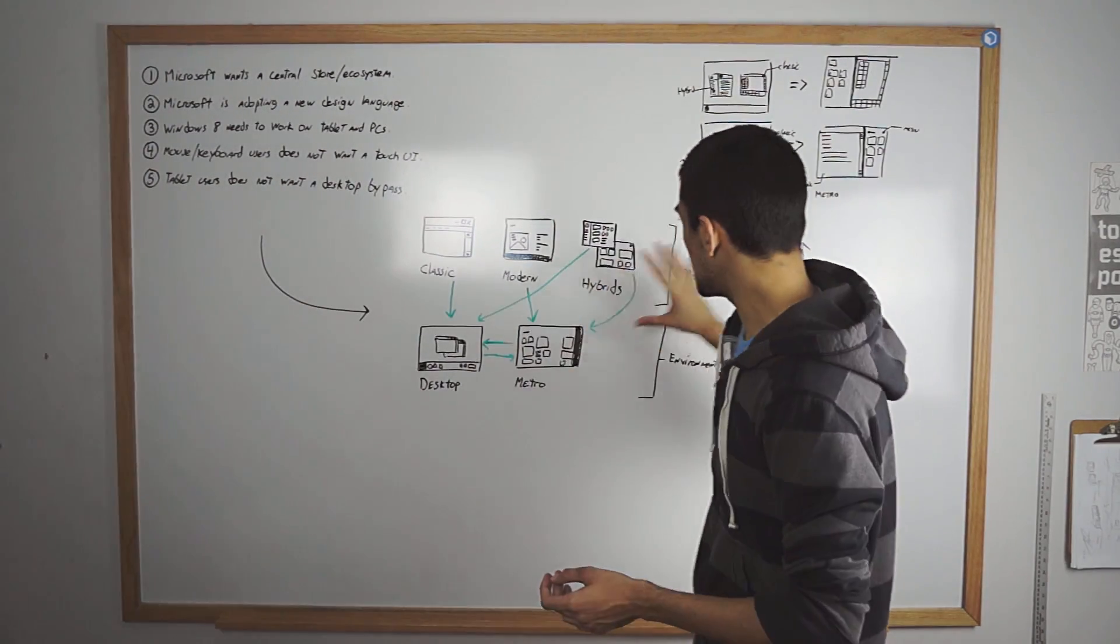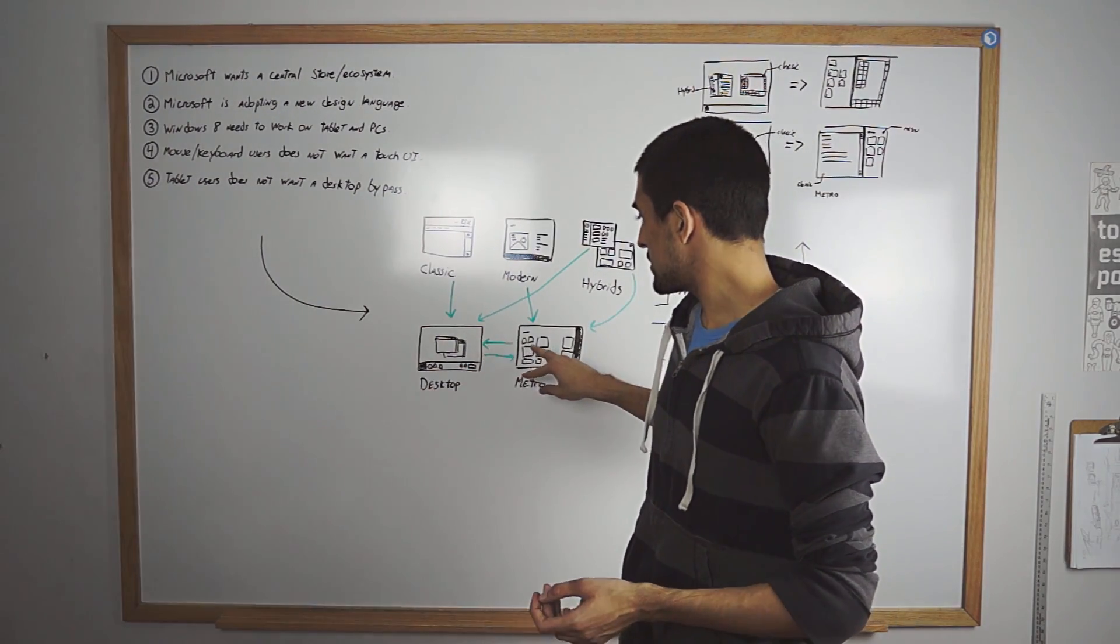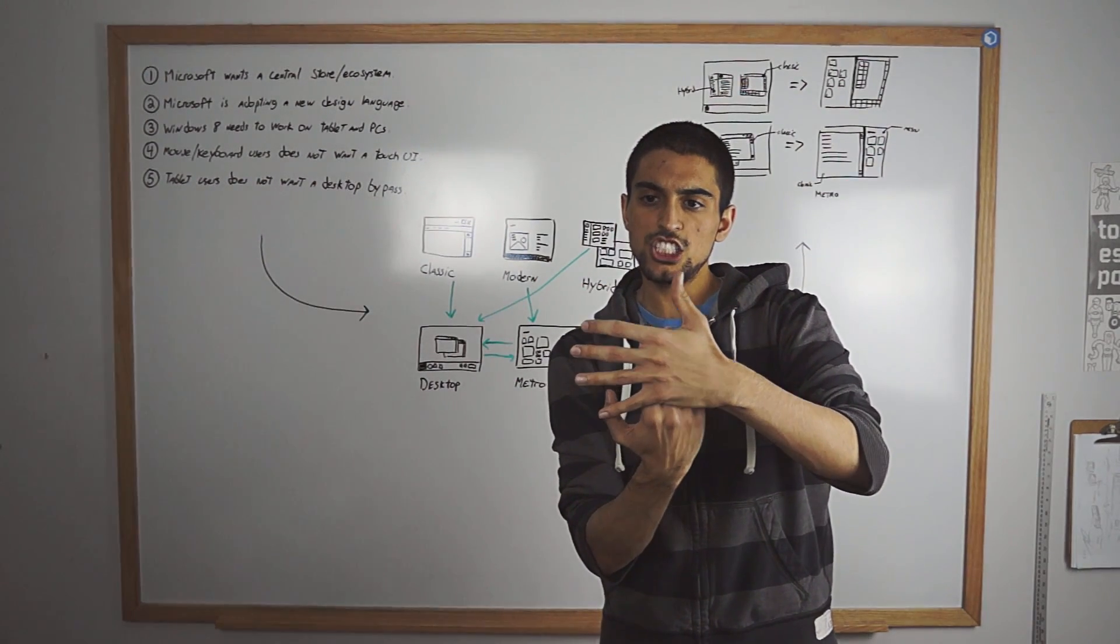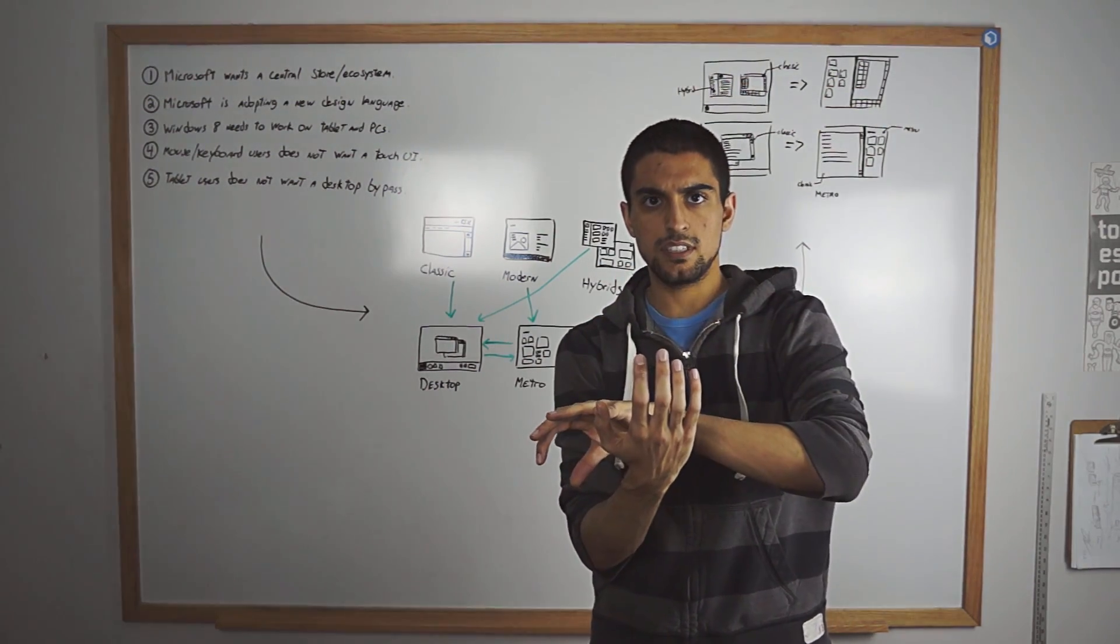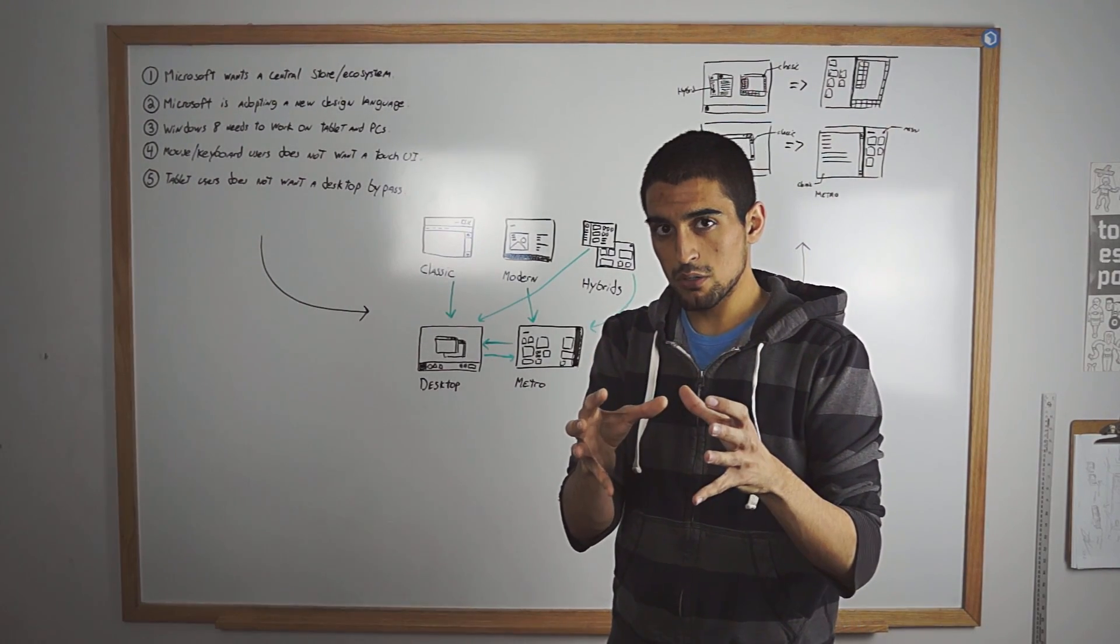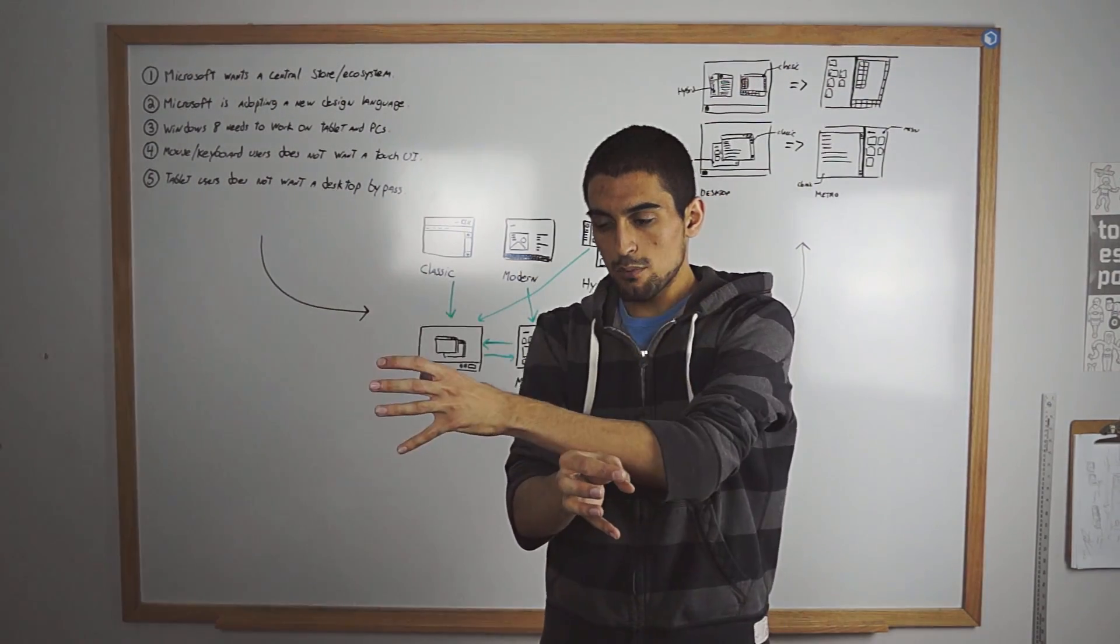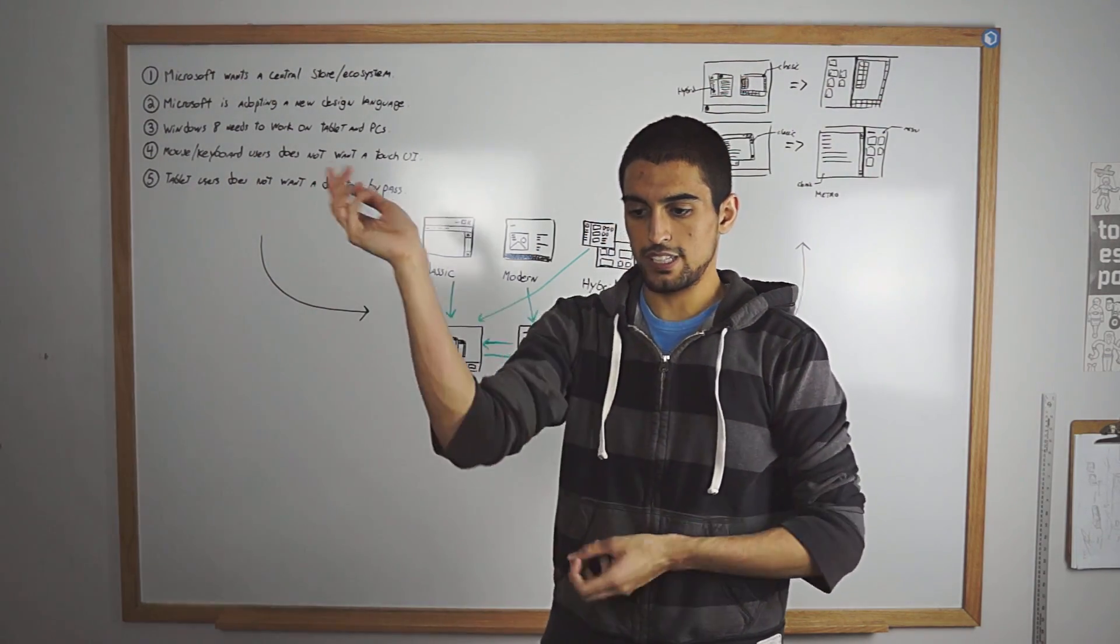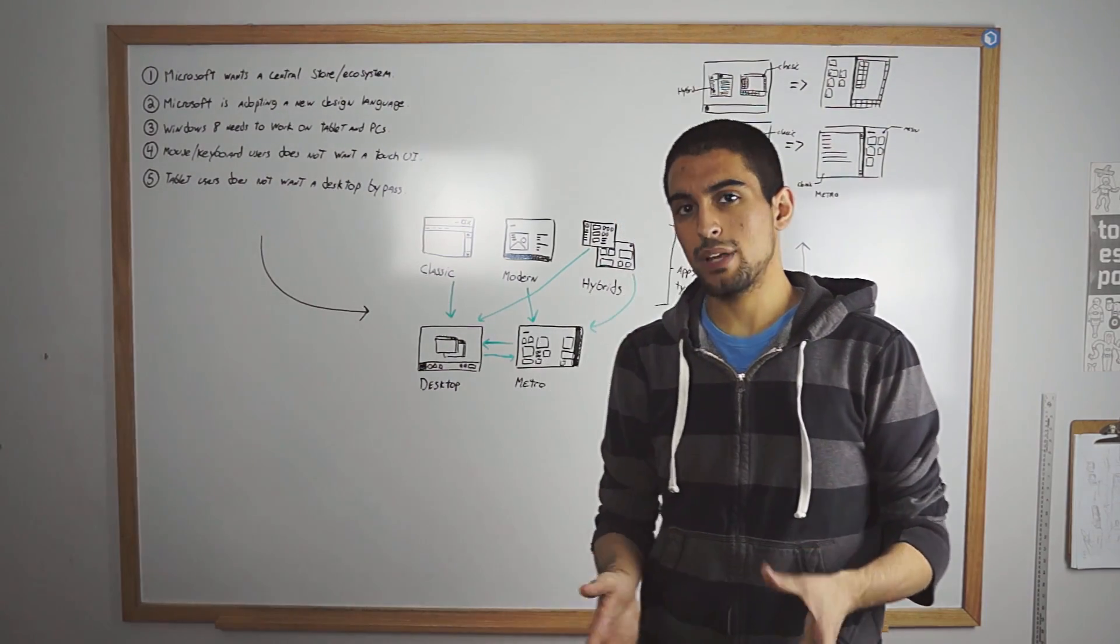So you have this big problem right now where you have two environments trying to work together, but one inside the other sharing those apps that can only be run in their respective environment. So I have my modern apps that run in Metro, the desktop runs in Metro, and the desktop runs those classic apps. And the hybrids are just smooshed in between everything. This is the confusion that we have right now with Windows 8.